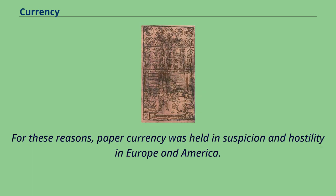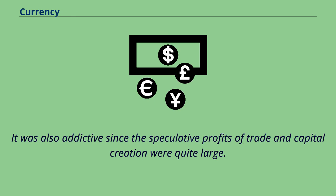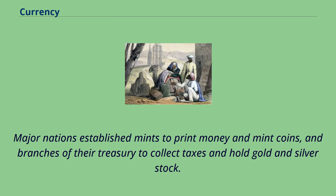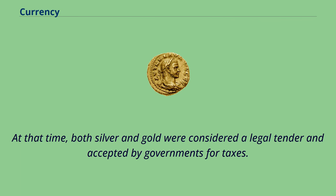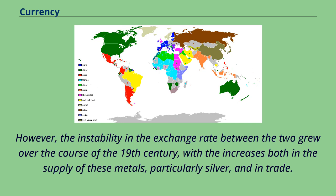For these reasons, paper currency was held in suspicion and hostility in Europe and America. It was also addictive, since the speculative profits of trade and capital creation were quite large. Major nations established mints to print money and mint coins, and branches of their treasury to collect taxes and hold gold and silver stock. At that time, both silver and gold were considered legal tender and accepted by governments for taxes. However, the instability in the exchange rate between the two grew over the course of the 19th century, with the increases both in the supply of these metals, particularly silver, and in trade.